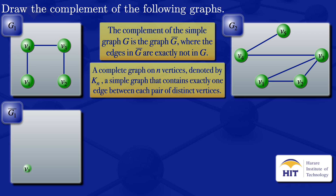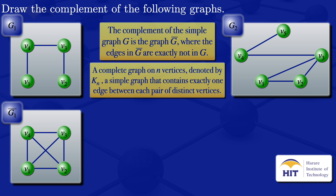For the graph K4, we have V1, V2, V3, V4, and we look at all possible edges. Edges where we have V1: V1 and V2, V1 and V3, V1 and V4. Then edges where we have V2: V2 with V1 is already there, V2 with V3, V2 with V4. Then edges where we have V3: V3 with V1 is already there, V3 with V2 is already there, so we need V3 with V4. And we now have a complete graph.